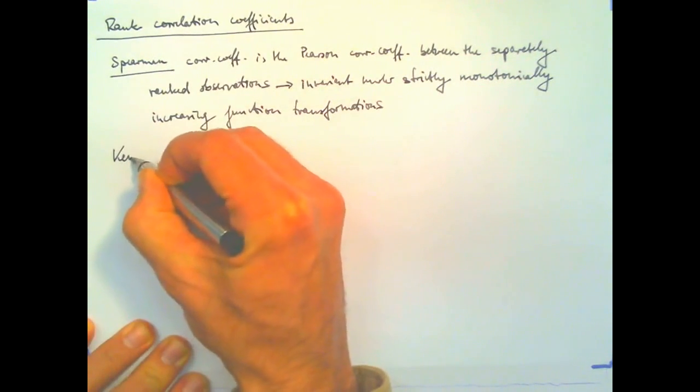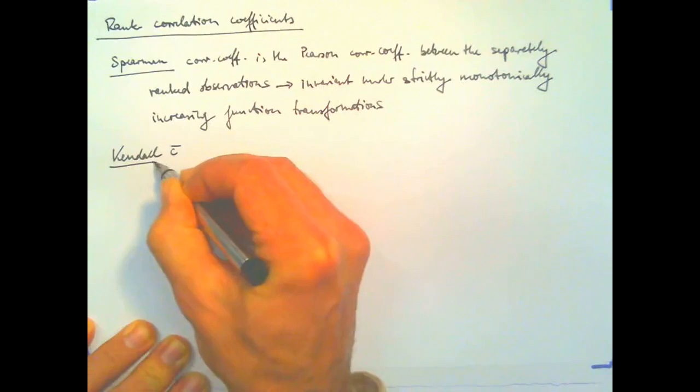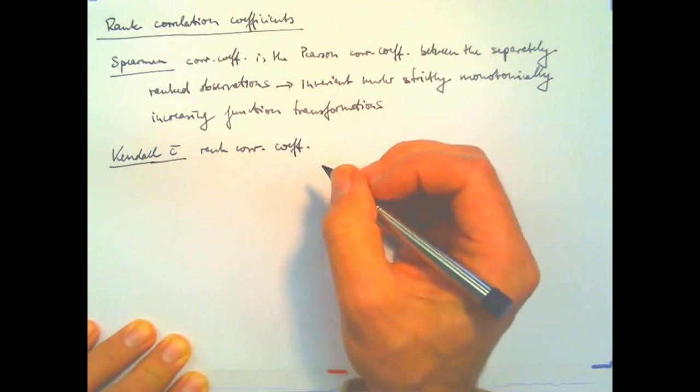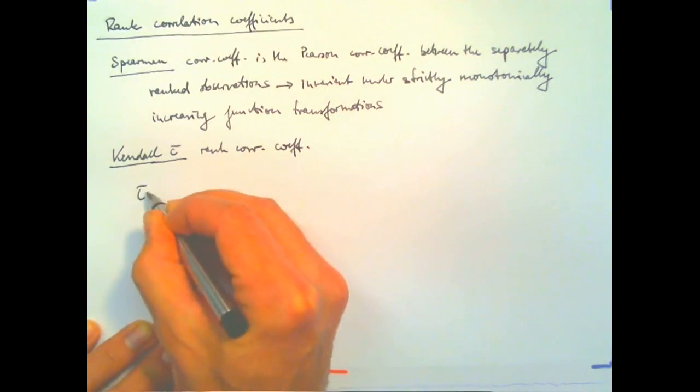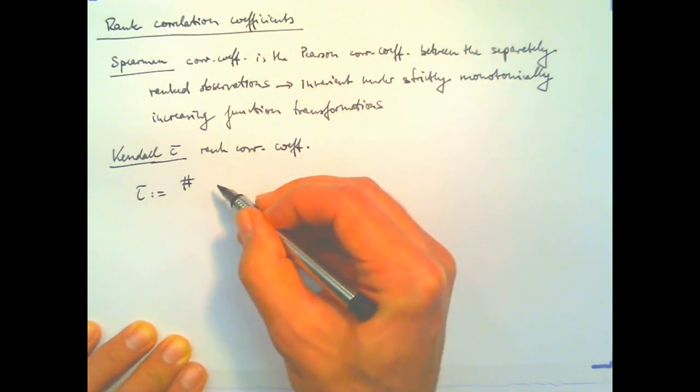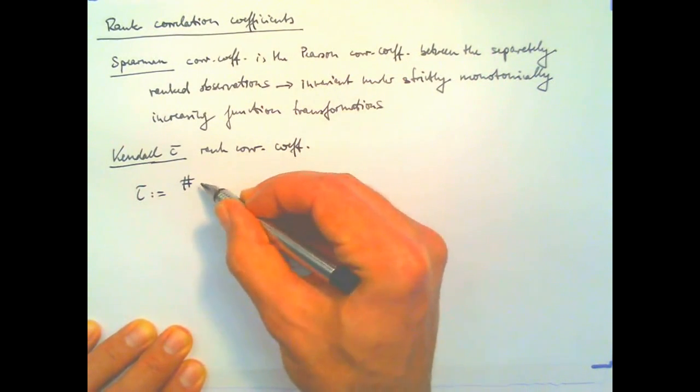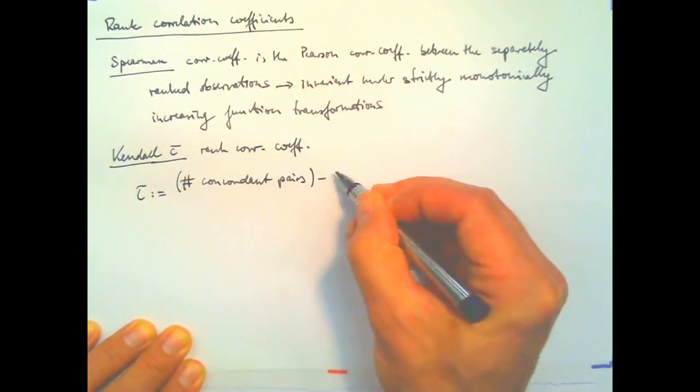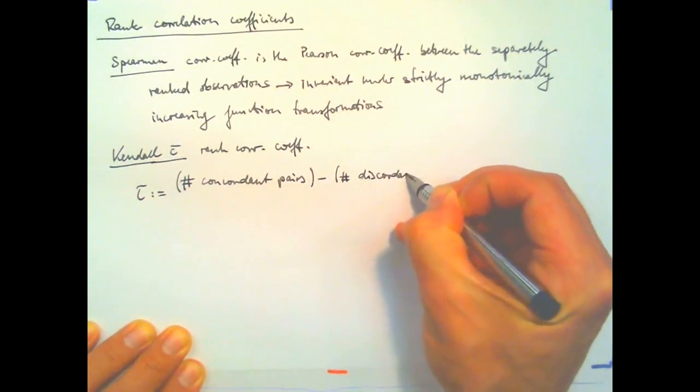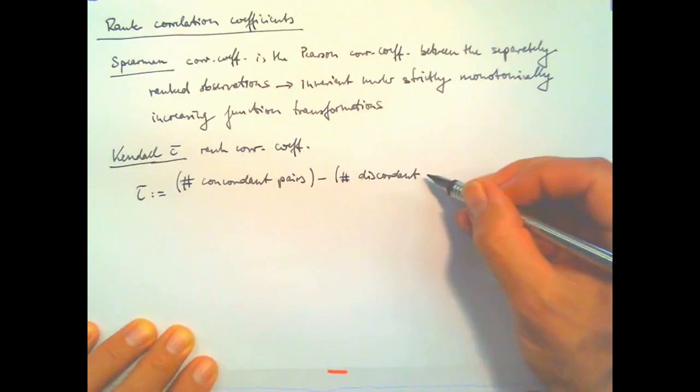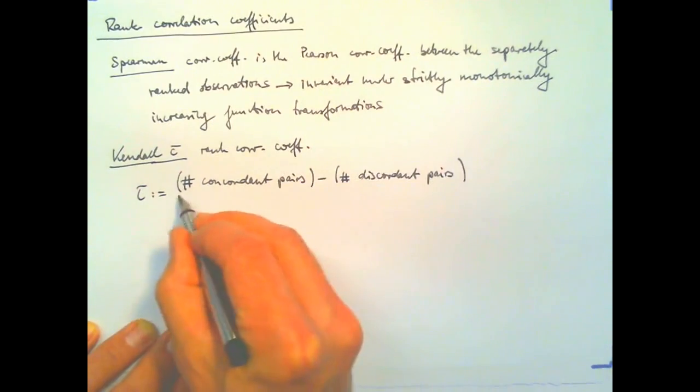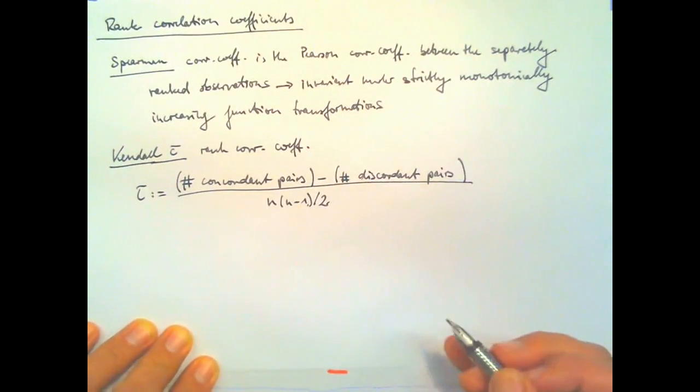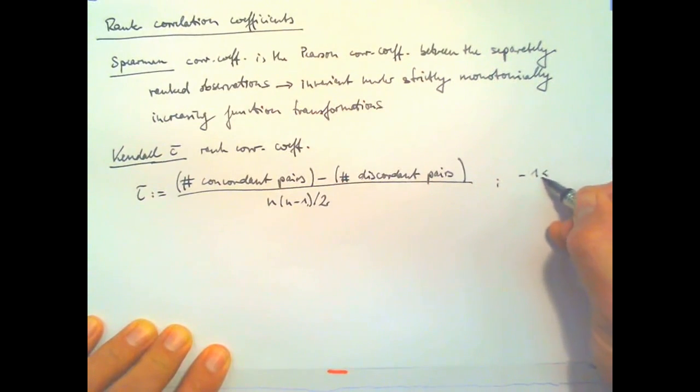And then there is the Kendall Tau rank correlation coefficient. So what you do here is you count the number of concordant and discordant pairs of observations, and you divide by the total number of pairs.